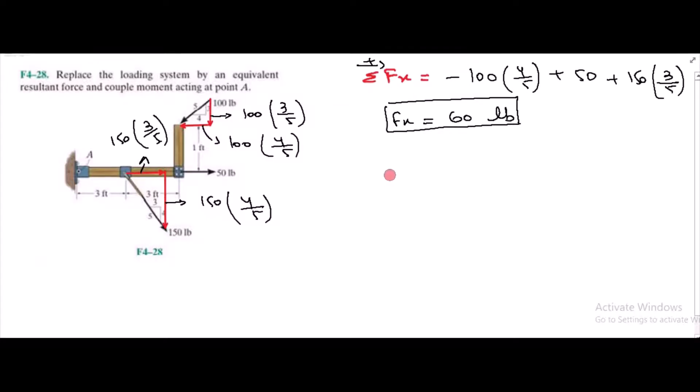Similarly, for the forces in the y direction, we are considering up direction as positive, then I have negative 100... Sorry, this is not equal to 0. 3 over 5, negative 150 times 4 over 5. So Fy is equal to negative 180 lb.